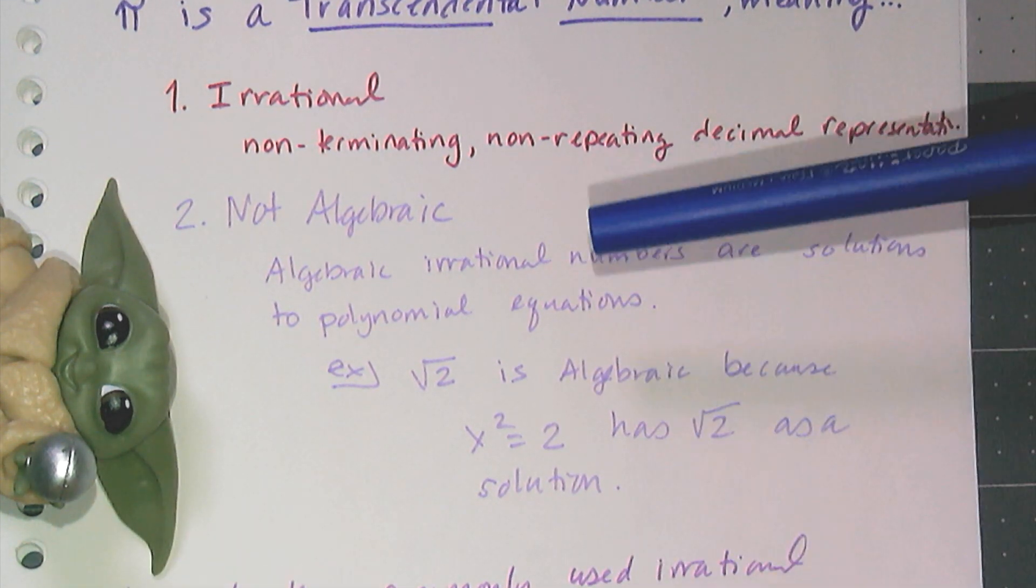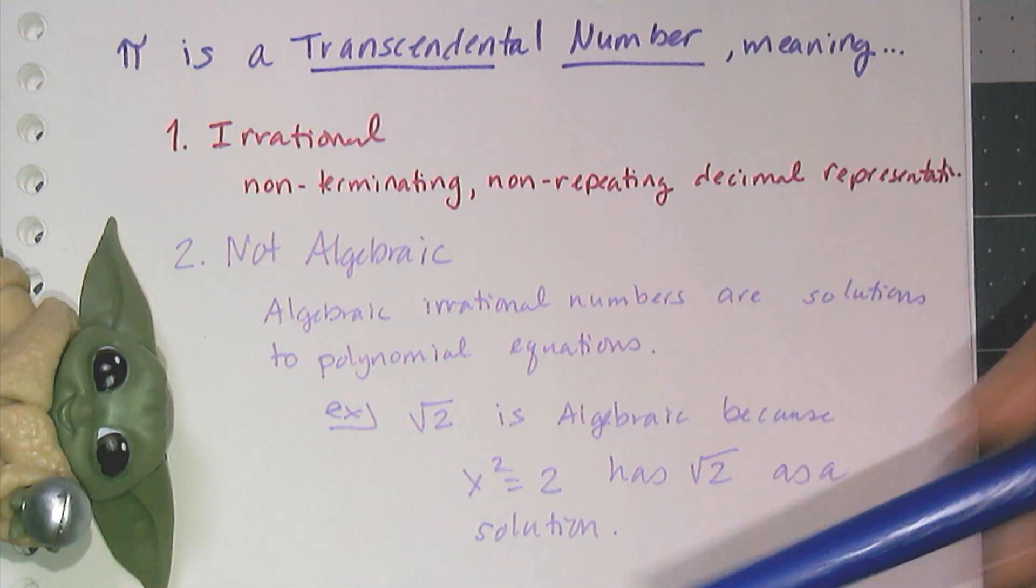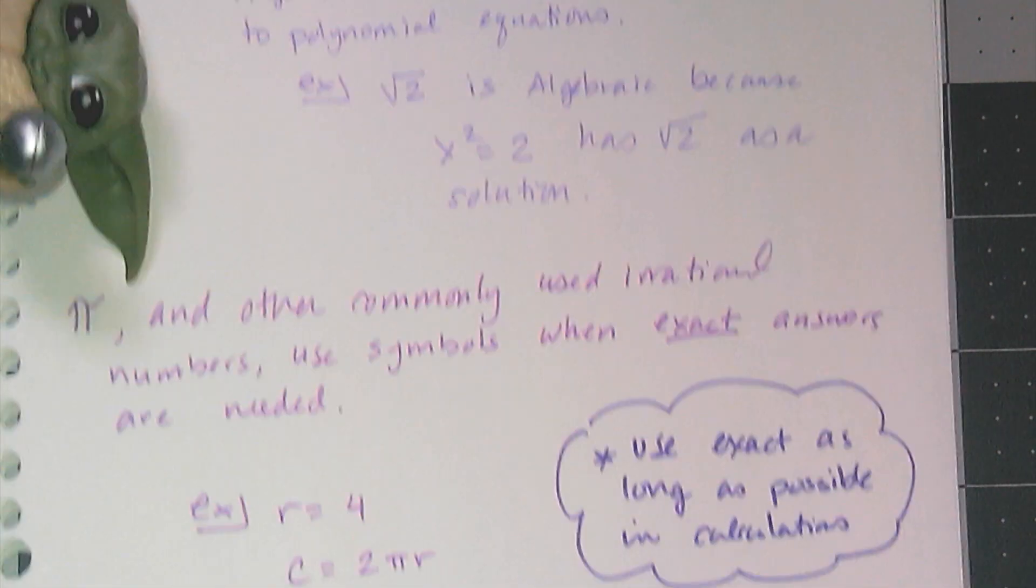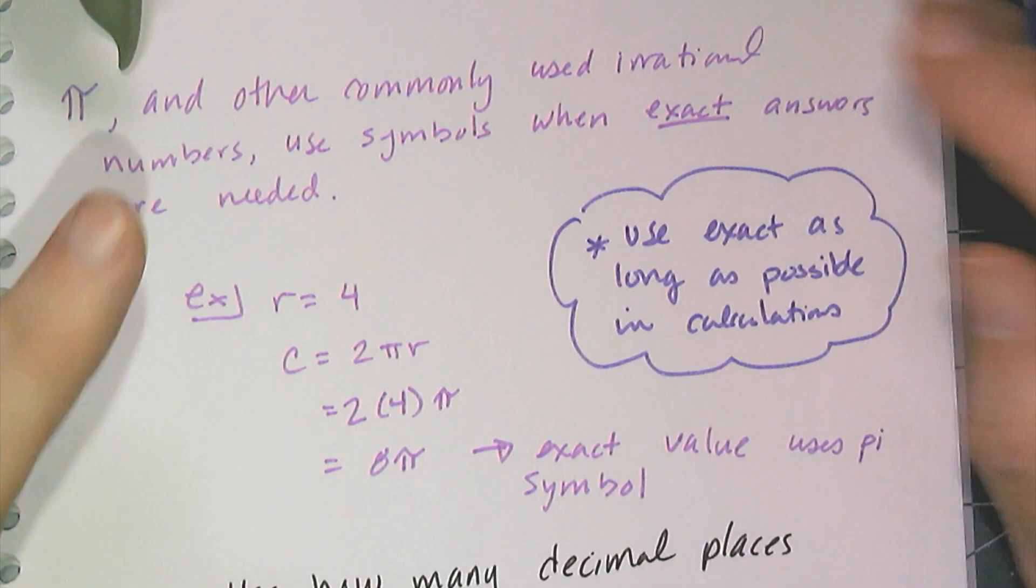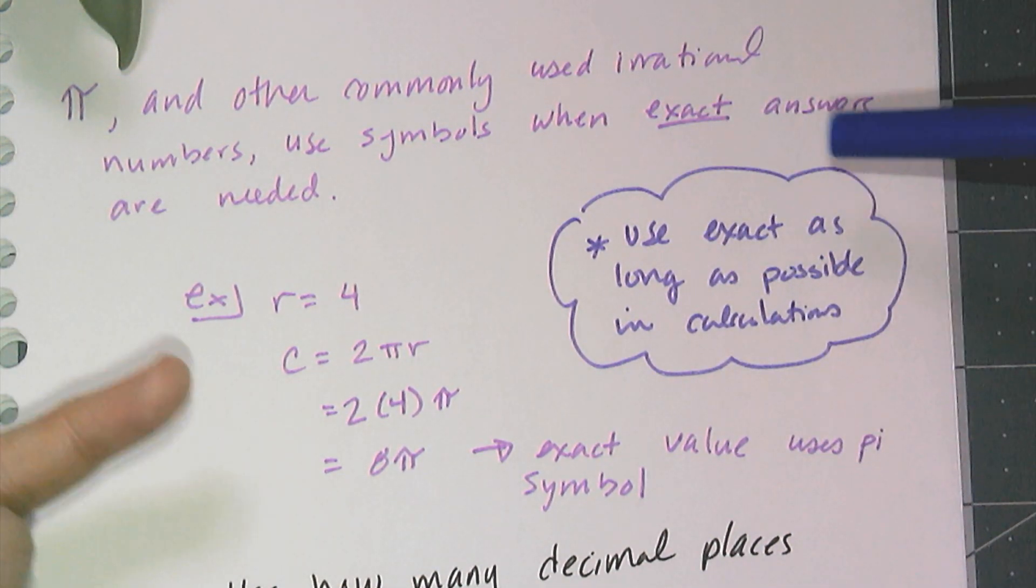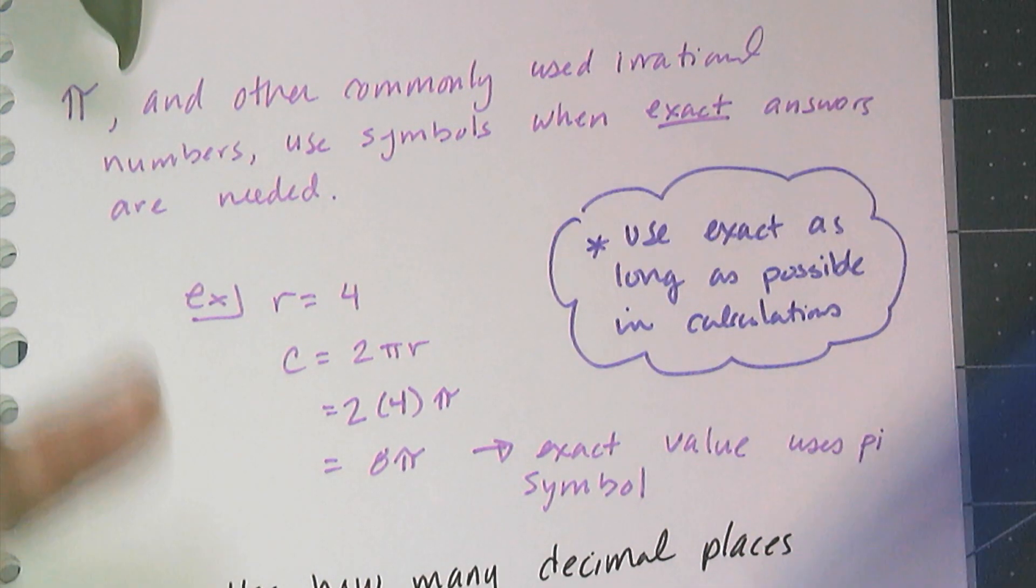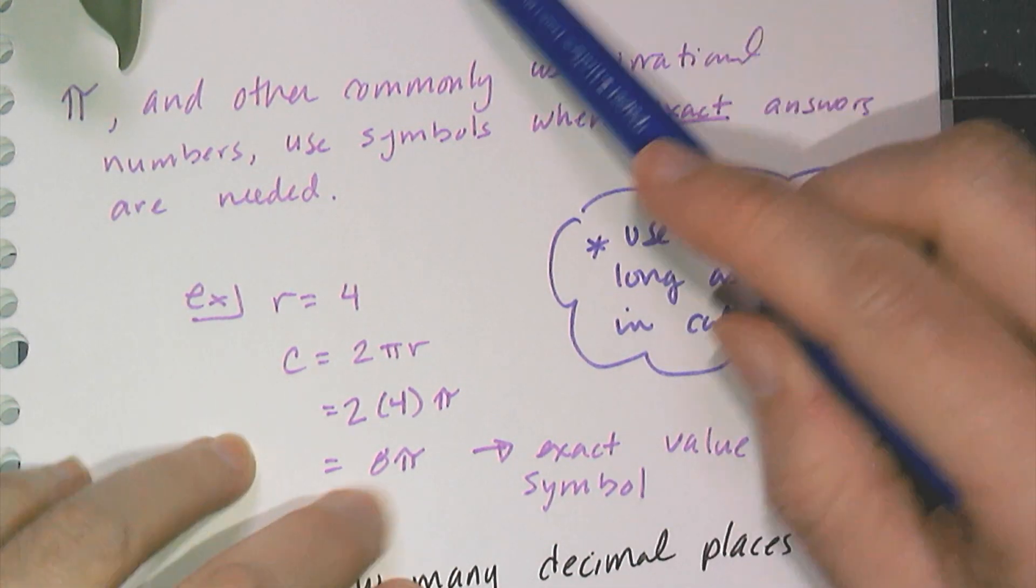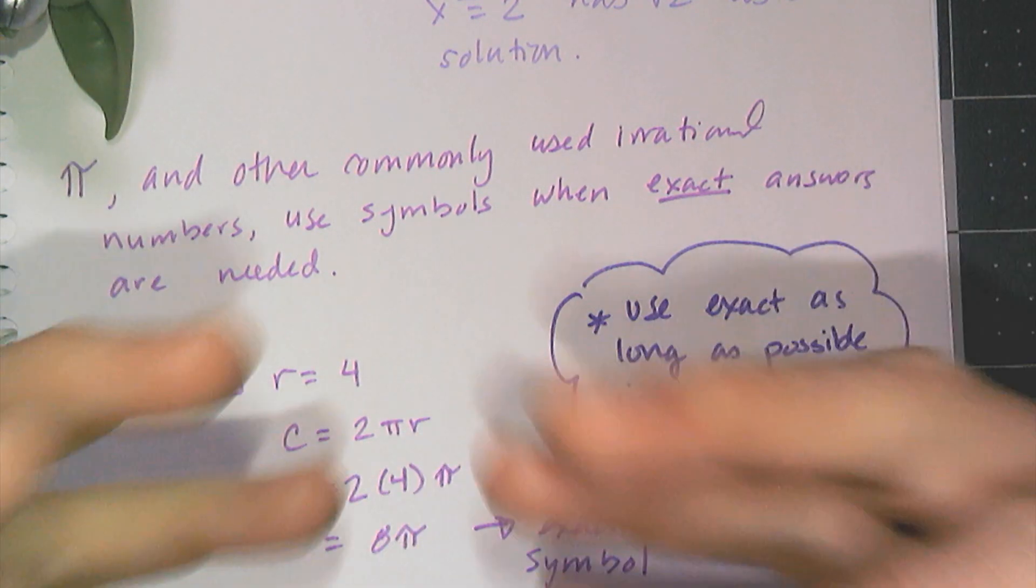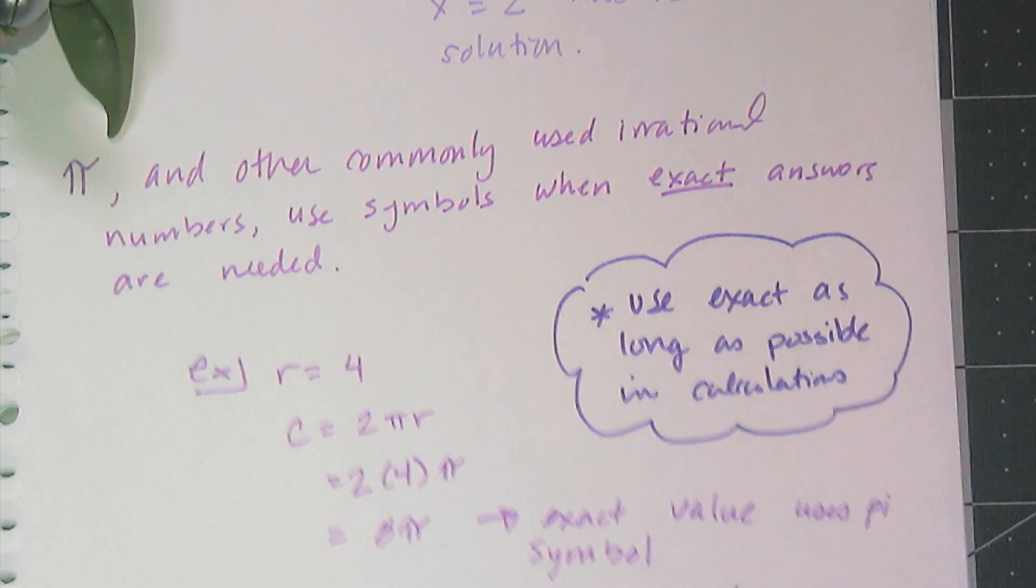Now I can make an entire series of videos on all the cool things about pi and how it's used and studied and different ways of finding approximations of it, but we're going to stick with the practical things we need for geometry in this video. The thing we need most is this reminder: pi and other commonly used irrational numbers like the square roots of 2, 3, and 5 use symbols to represent their exact values. If I want the exact value, the symbol pi has to be in there. This simple Greek letter pi is the exact value of the ratio of a circumference to a diameter of a circle.